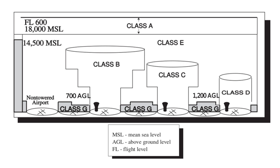In Norway, airspace is divided into Classes A, C, D and G. Class A is only used for Bodo OCA, FL 195 and up. Class C is used for controlled airspace. Class D is used for controlled airspace where C is not used. Class G is used elsewhere. G** is used in TIS and TIA where two-way radio communication is required during opening hours.